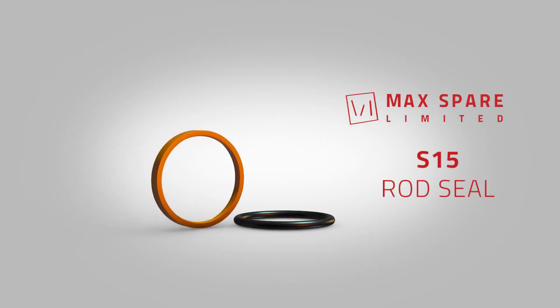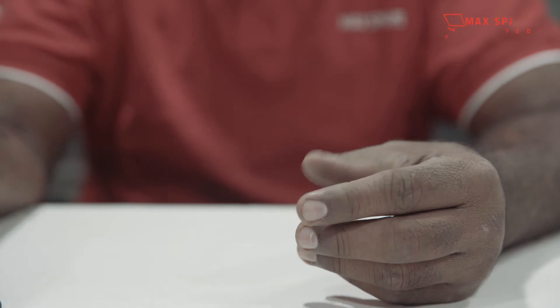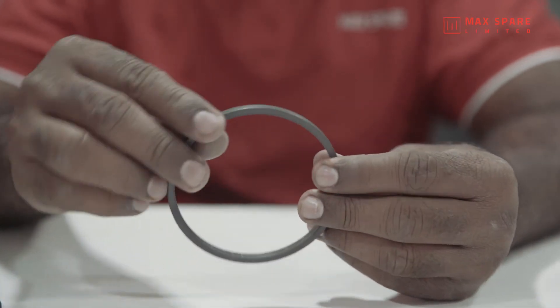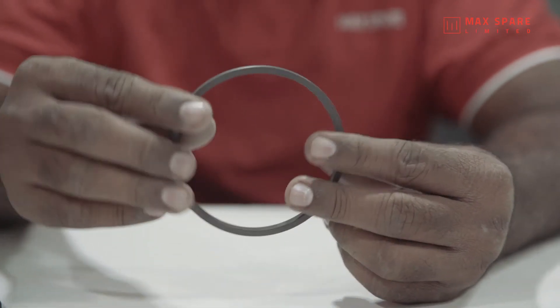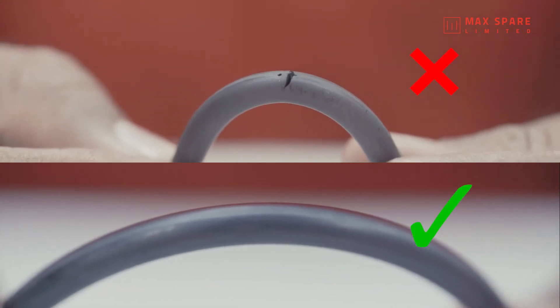Installation of Max Spare S15 Rod Seal. Inspect the O-ring and the sealing ring for any cracks or defects before installation. Check the edge of the seal groove surface for any damages.